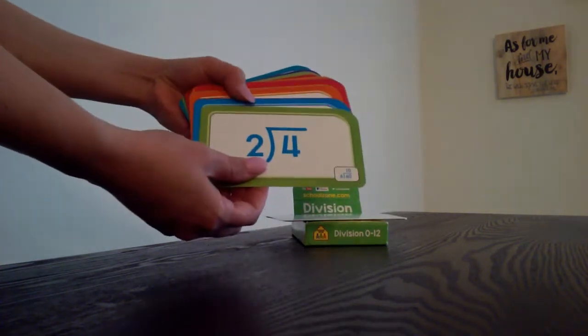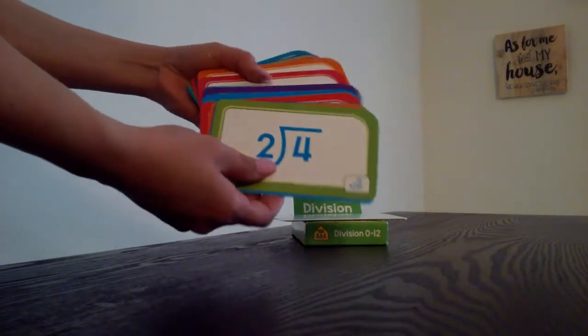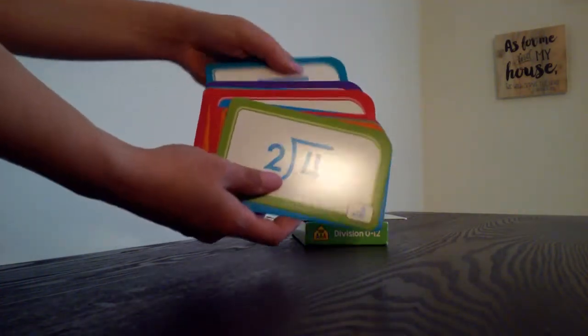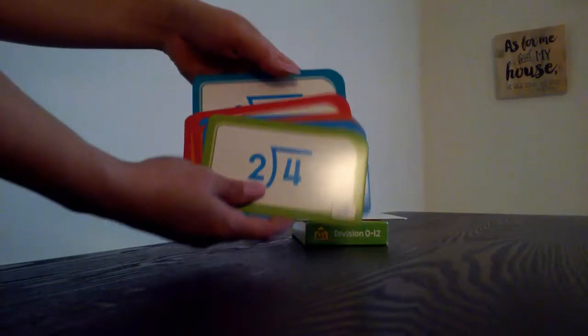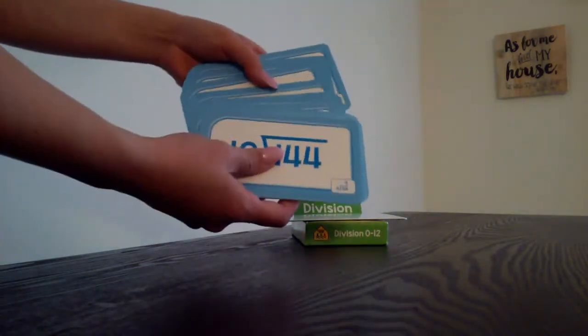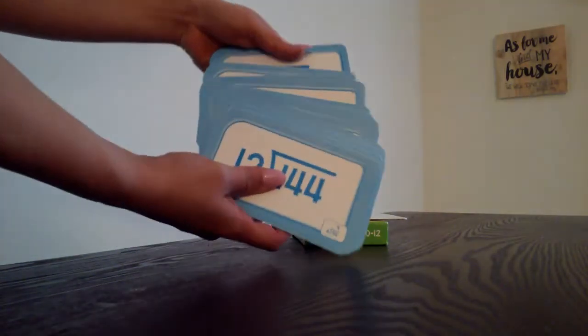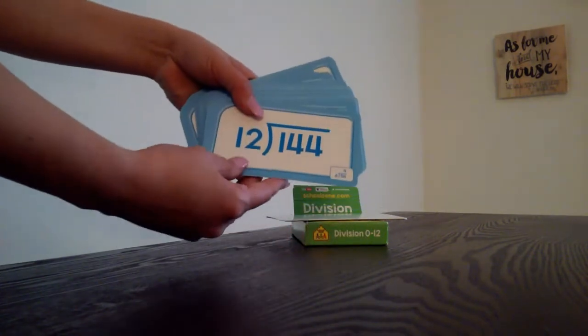This side of the cards you have the two divisions. You got three. It goes up to some of the sixes. And then you flip the cards over. It has the rest of the sixes, the sevens, all the way up to twelve.